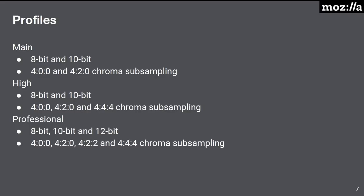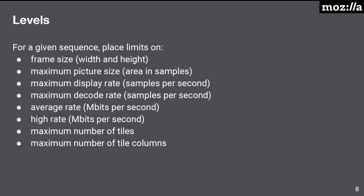In AV1, there are three profiles: main, high, and professional. These differ in their bit depth and chroma subsampling. You'll note that they all have 10-bit support, because we expect people picking up AV1 to be primarily interested in 10-bit. We also have a professional mode with 12-bit and 4:4:4 chroma subsampling. There are also normatively specified levels — for a given frame size and frame rate, we have normative operating points with guarantees on the decode rate, average rate, number of tiles, and number of tile columns in the frame.